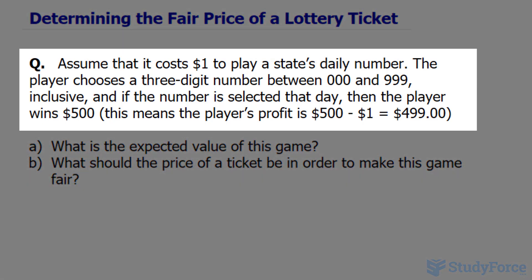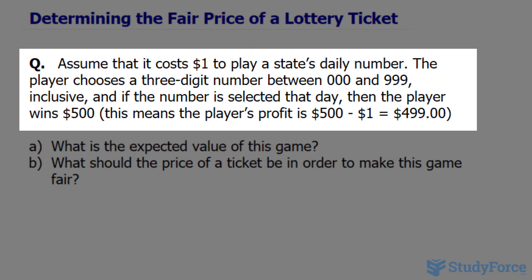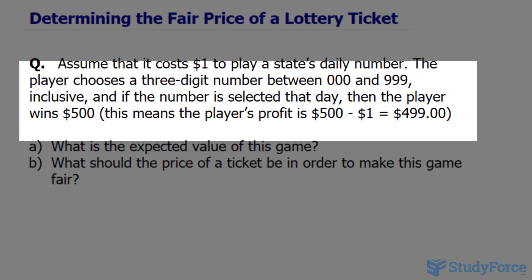The question reads: assume that it takes $1 to play a state's daily number. The player chooses a three-digit number between 000 and 999, inclusive, and if the number is selected that day, then the player wins $500. This means that the player's profit is 500 minus 1, which totals up to $499.